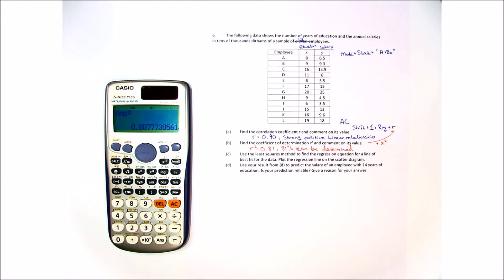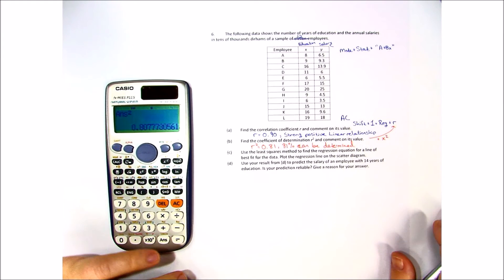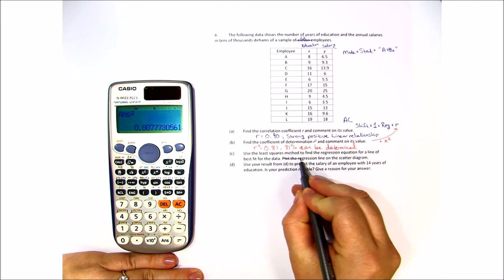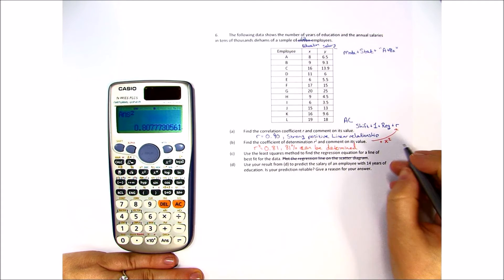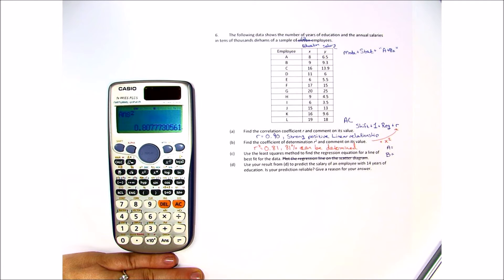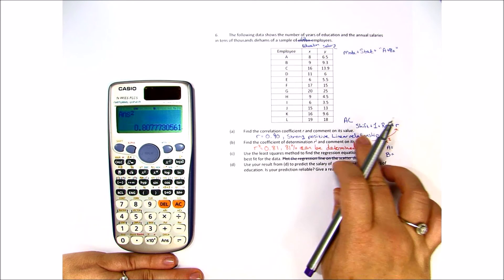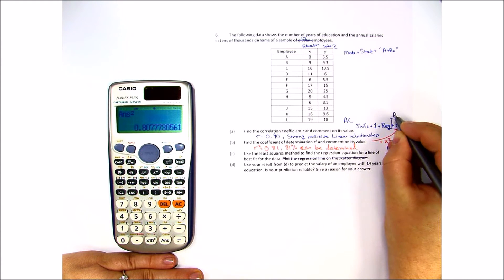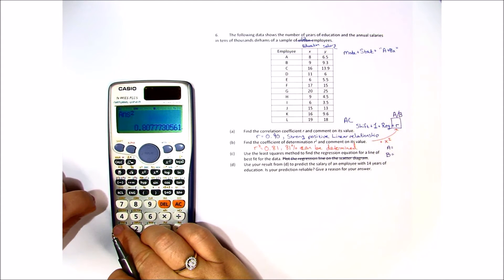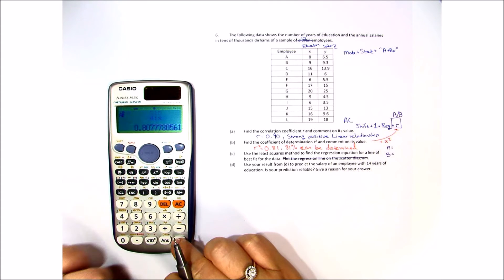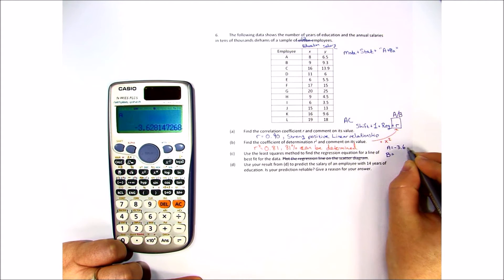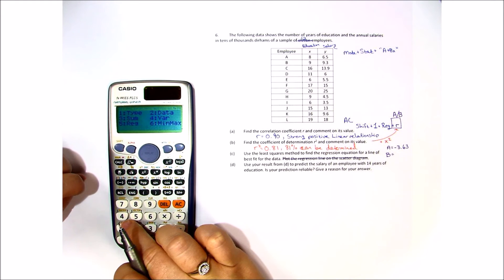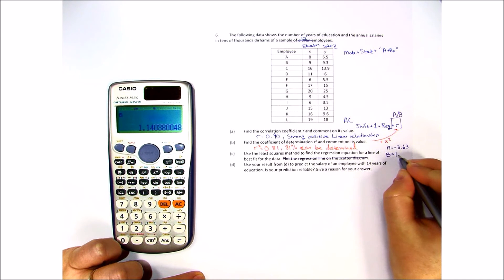The next question says use the least squares method to find the regression equation for a line of best fit for the data. Plot the regression line on the scatter diagram. We're actually not going to do that because that will be a little bit later on. So what we're going to do is we're going to find a and b and then try to solve it. Now you have to follow the exact same rules as previous. Shift 1 regression but instead of choosing r here you're going to choose a or b. So shift 1 regression and I'm going to start by choosing a and I get a is negative 3.63. Now I'm going to do the same process for b and I get b is 1.14.